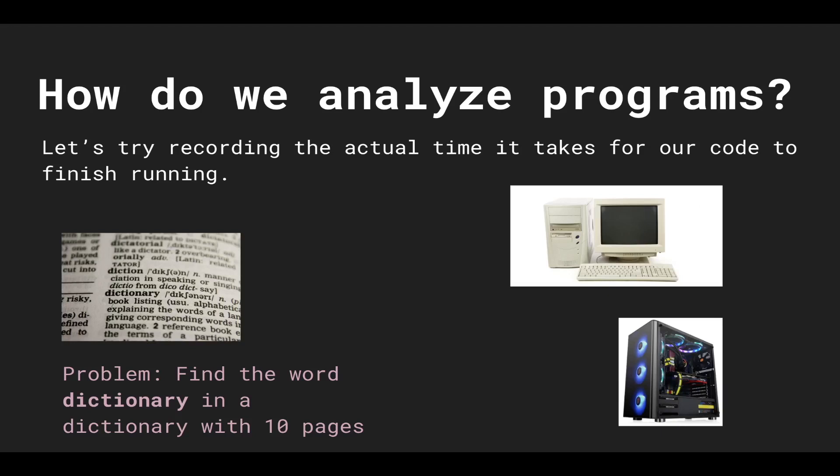So how do we analyze programs? The first thought you might have is to try recording the actual time it takes for your code to finish running — you mark the start before your algorithm runs and the end when it finishes. Let's give an example: say you're given a problem and you have to find the word 'dictionary' in a dictionary with 10 pages, and in this example there's a slow computer and a gaming computer.